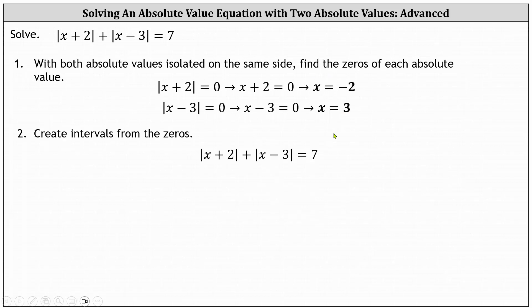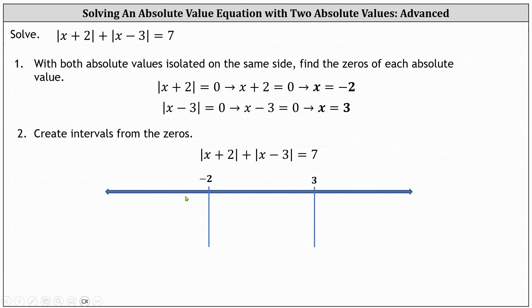We now use these values and create intervals from the zeros. Considering the real number line, if we exclude negative two and positive three, on the left we have the open interval from negative infinity to negative two. In the middle we have the open interval from negative two to three. On the right we have the open interval from three to infinity.